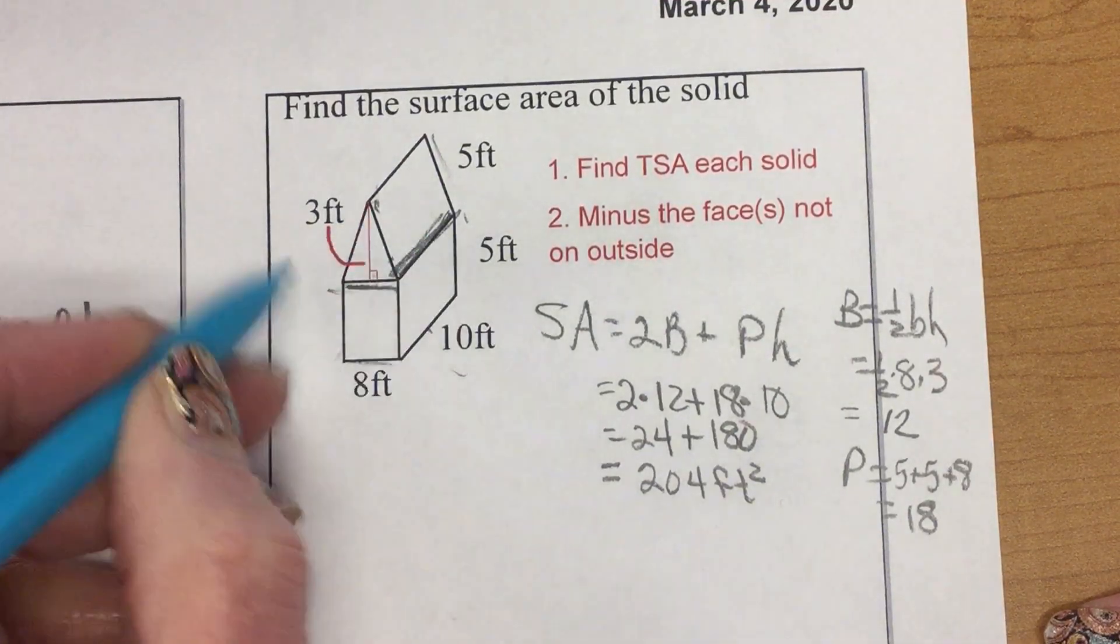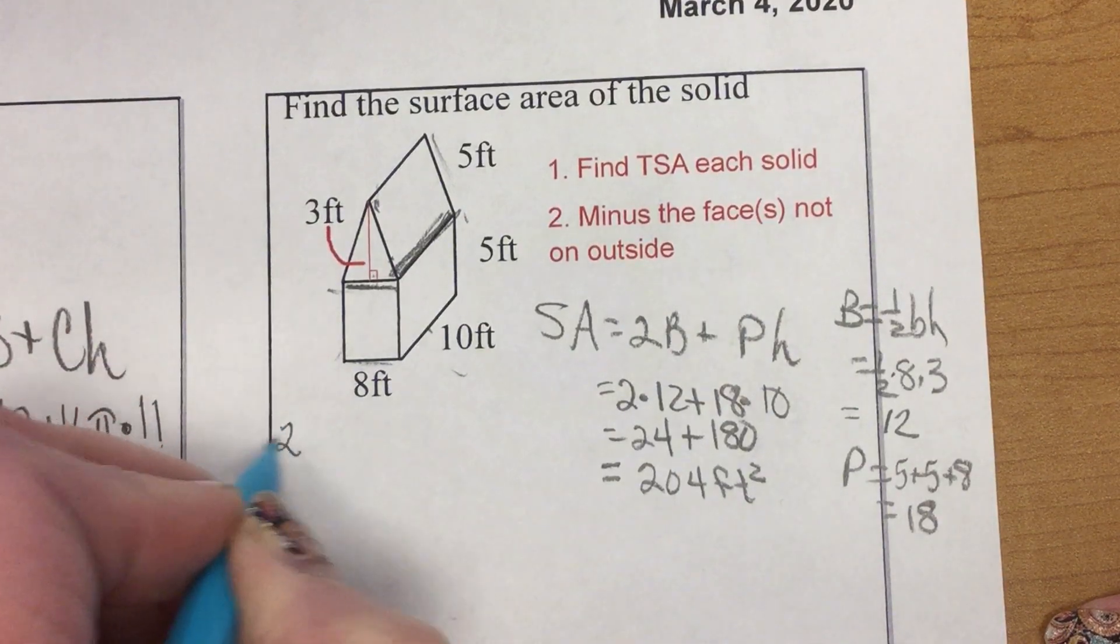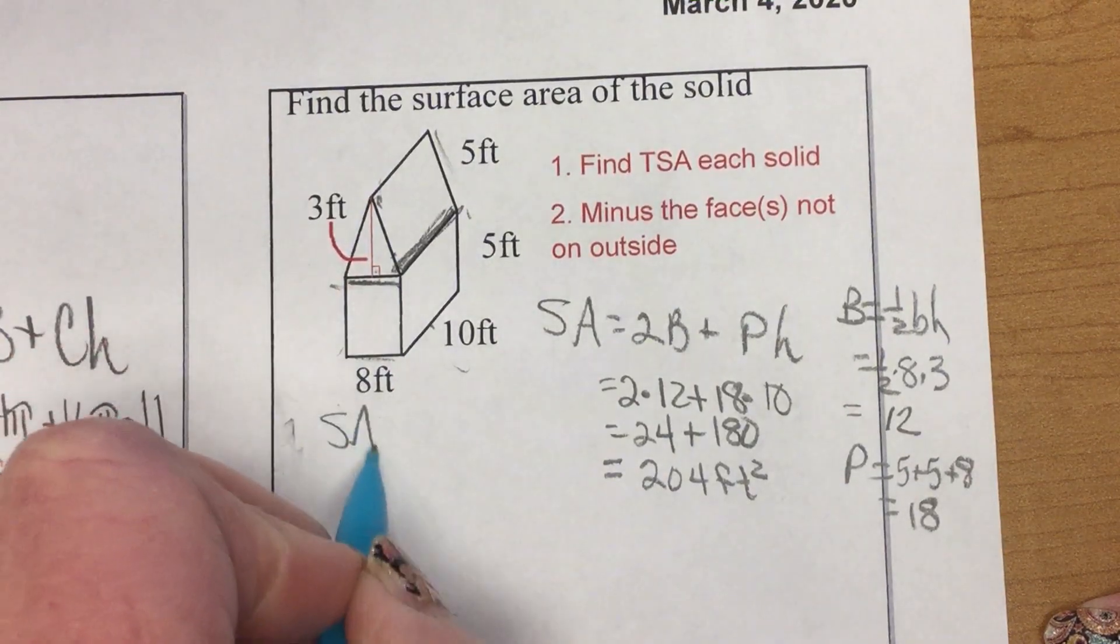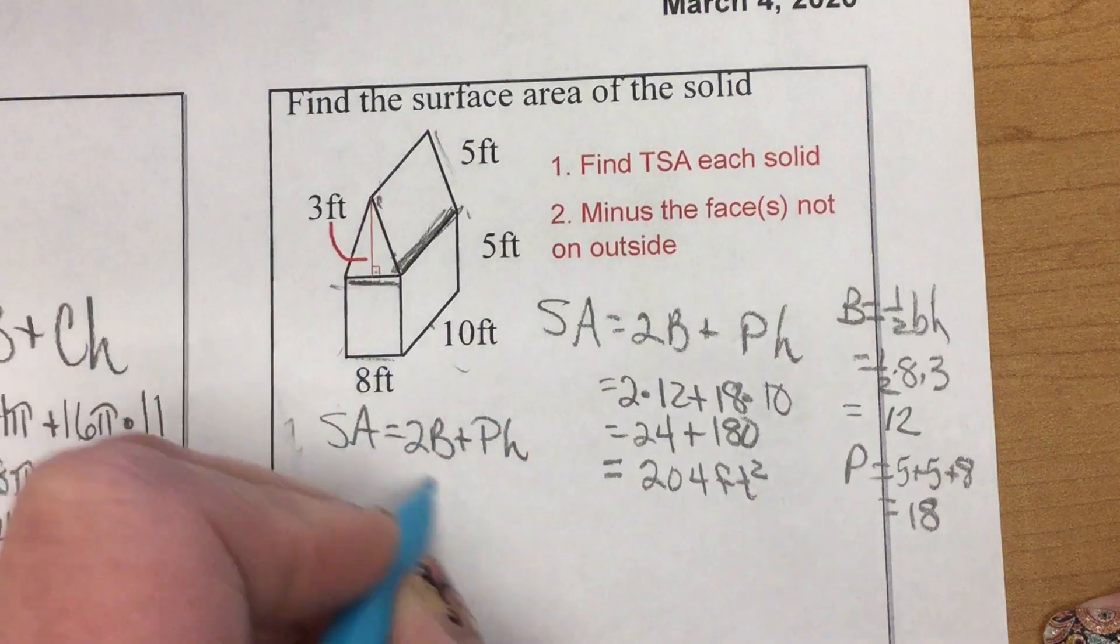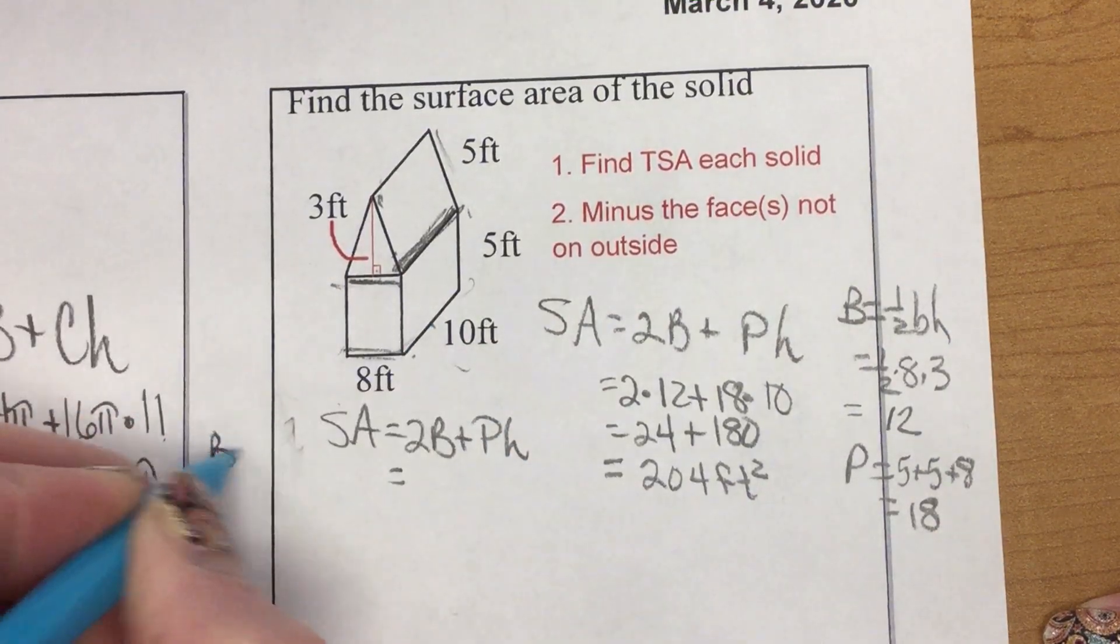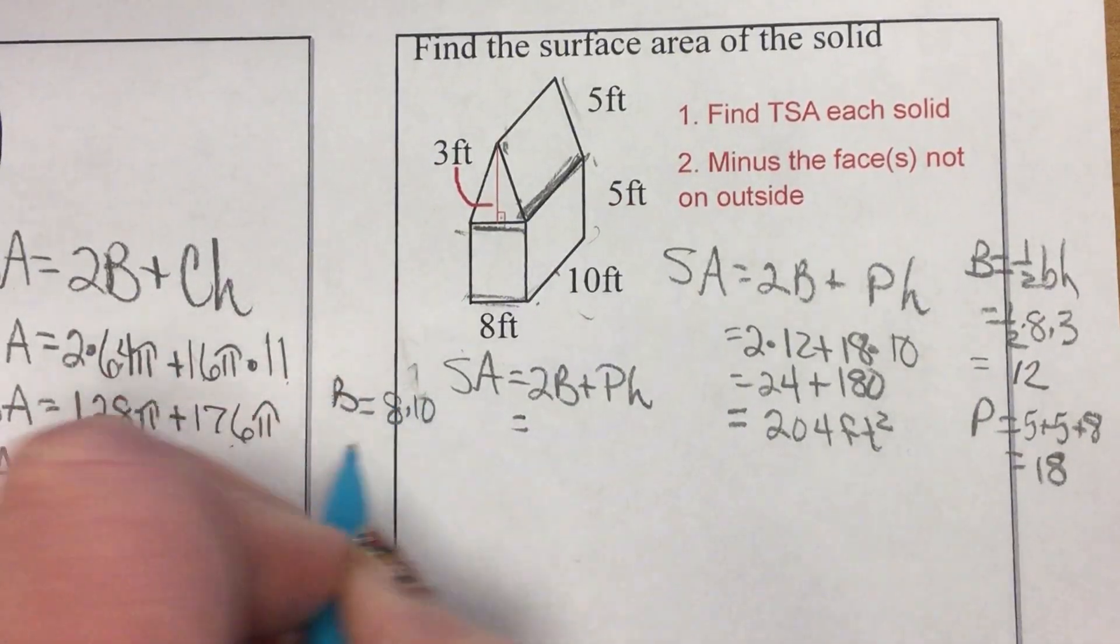Now, this rectangular prism. 2 capital B plus PH. Now, this base is 8 by 10. So, capital B equals 8 times 10, 80.